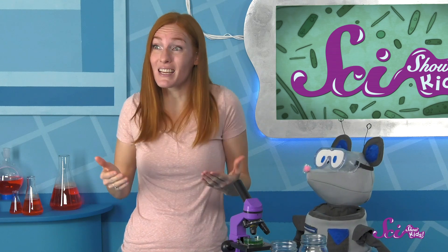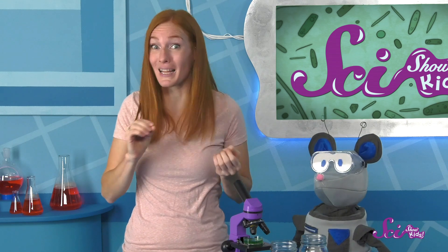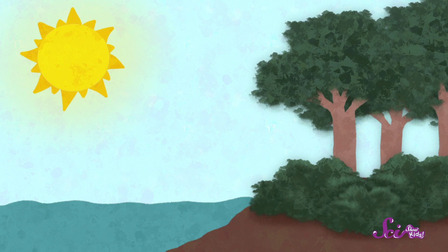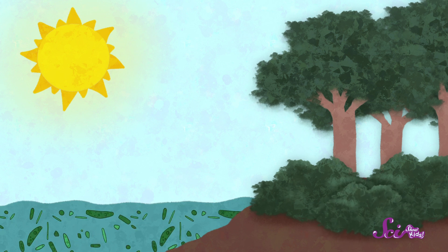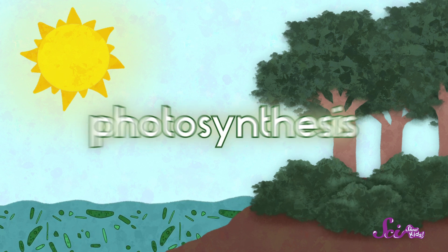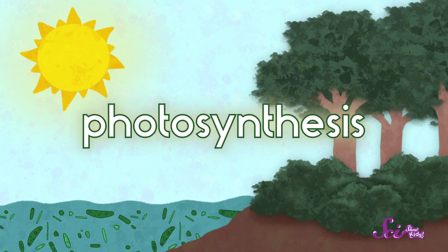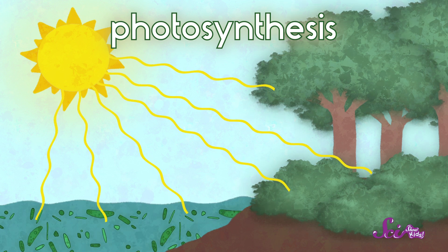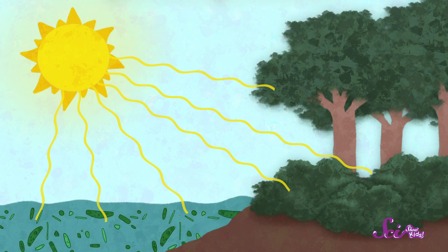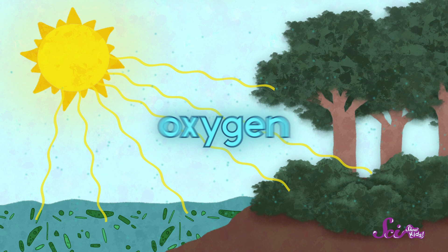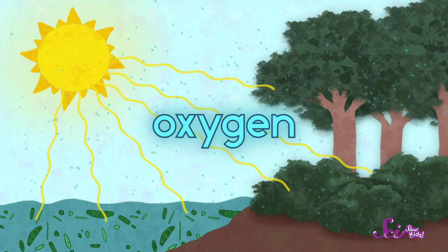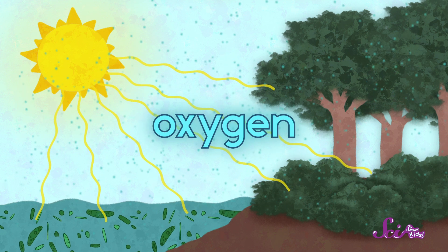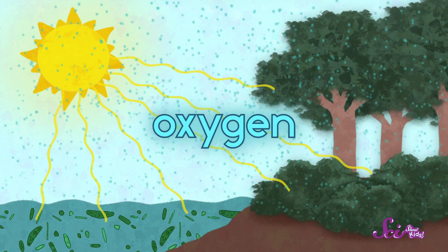See, trees, bushes, and those green phytoplankton in your pond water all do something called photosynthesis. That's where they take light from the sun and use it to make food for themselves. And when they do this, they also make oxygen, which is one of the ingredients in our air that we need to breathe.